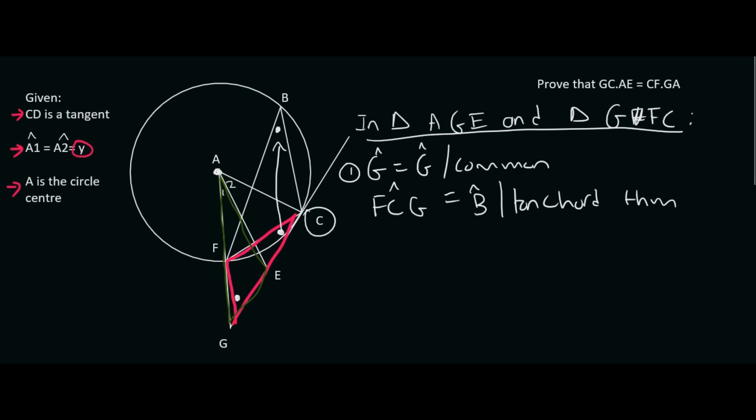But then I know that angle B, or let me rather say that this whole of angle A, which is FAC, is two times angle B. Why? Because of the, remember, angle at center. This is all grade 11 stuff. Angle at center equals two times angle at circumference. So that would mean that angle B would be equal to Y. Why? Because we know that A1 and A2, they're both Y, so together this whole angle is 2Y. But we've just said that B is half of that.